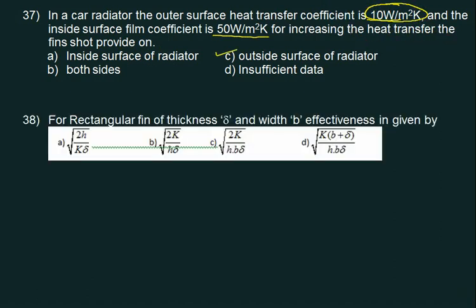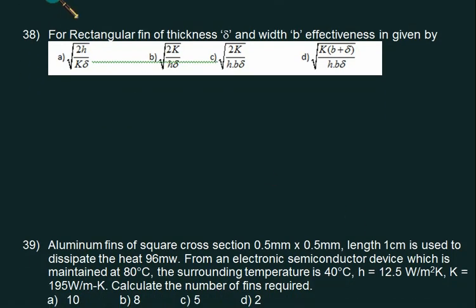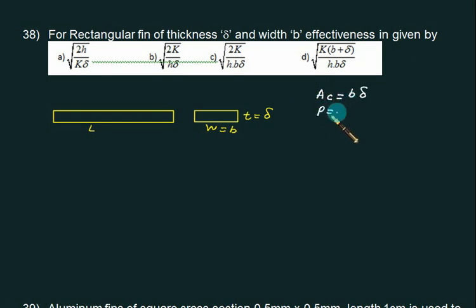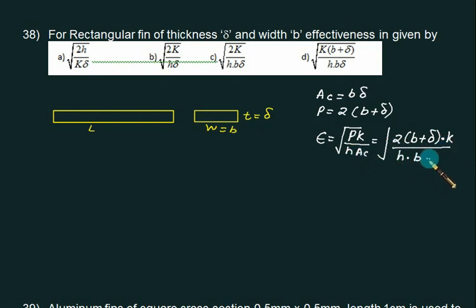In this question we have rectangular fin of thickness equal to delta, width equal to B, and we have to find out effectiveness. We are given the length of fin equal to L, W is same as B. So we have cross section equals to B multiplied by delta, perimeter is two times of B plus delta. We know the expression for effectiveness is under root of PK by HAC. Substitute the value, we will get under root of perimeter two times B plus delta multiplied by K divided by H divided by B multiplied by delta.